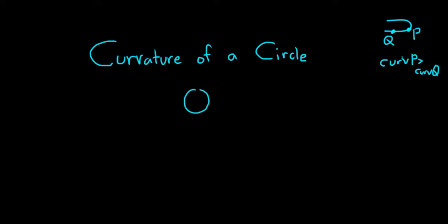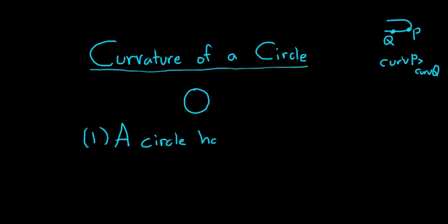Now, in a circle, it would appear that the way it's bending is the same everywhere. So that's the first remark: a circle has the same curvature at every point.